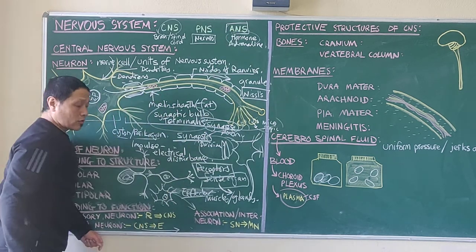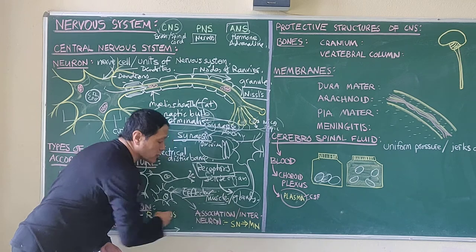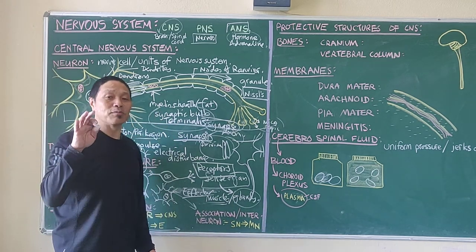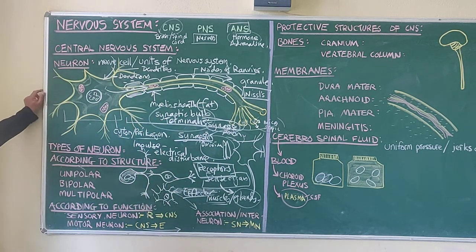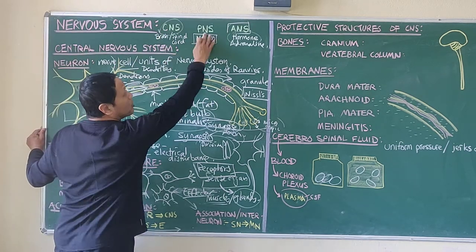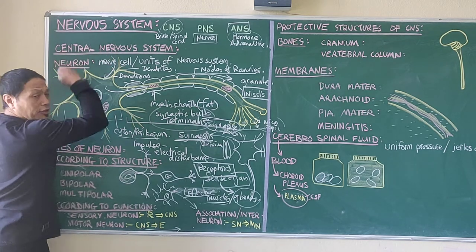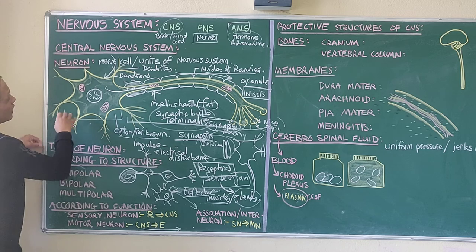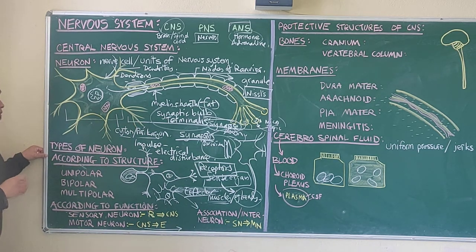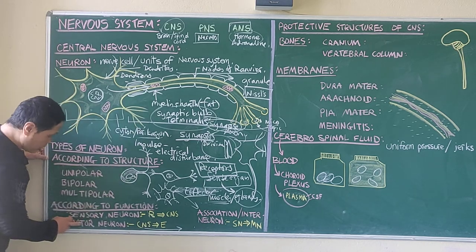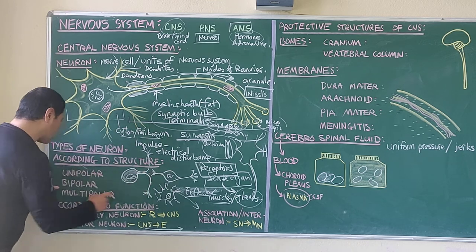In the case of the autonomic nervous system, it activates a gland called the adrenal gland. To summarize: the nervous system divides into the central nervous system, the peripheral nervous system, and the autonomic nervous system. The unit of the nervous system is the neuron. According to structure, neurons are unipolar, bipolar, or multipolar. According to function, there are three types: sensory neurons, motor neurons, and association neurons.